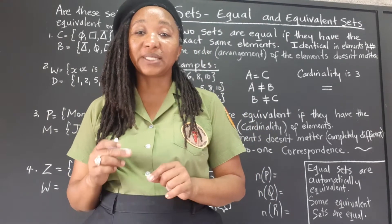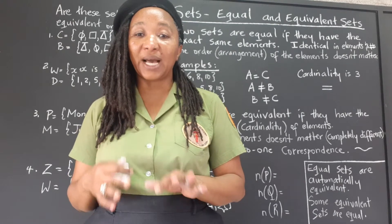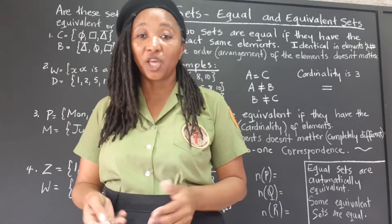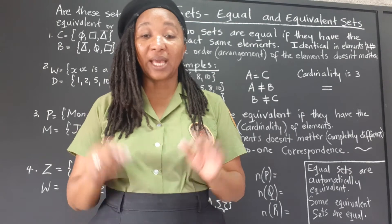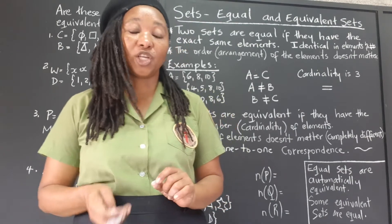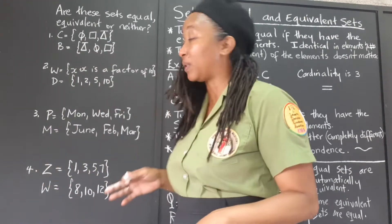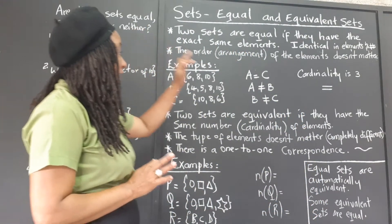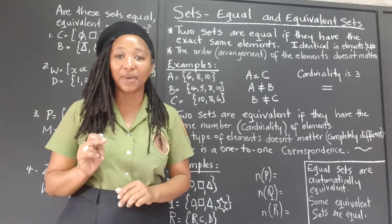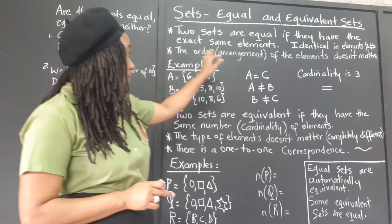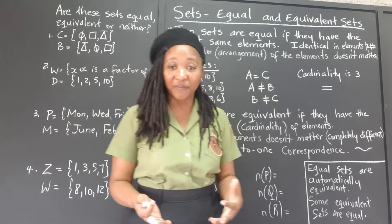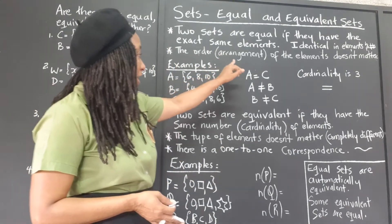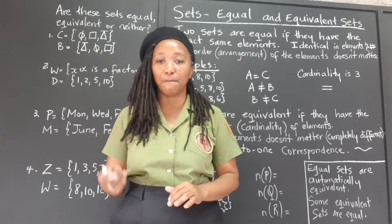So equal sets are exactly the same. The elements in the two sets are identical in number and in type — the exact same elements. It does not matter the order. The definition says two sets are equal if they have the exact same elements. The elements are identical in type as well as in number, and the order or arrangement of the elements does not matter.